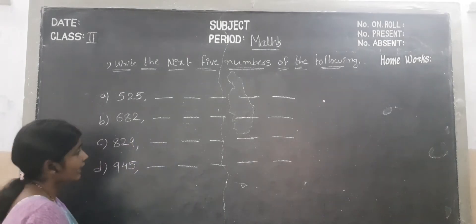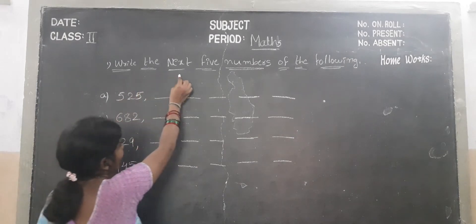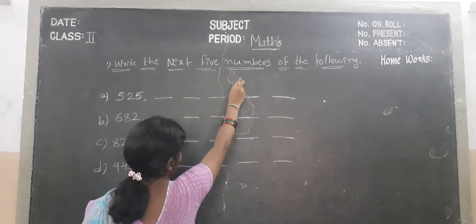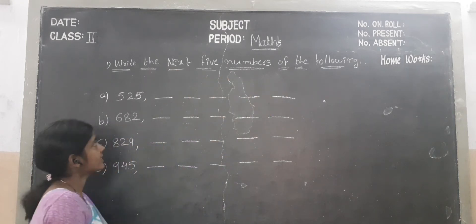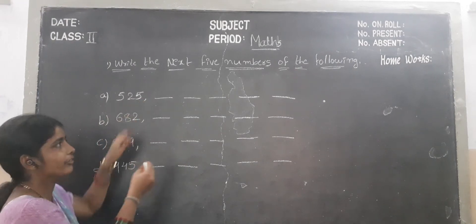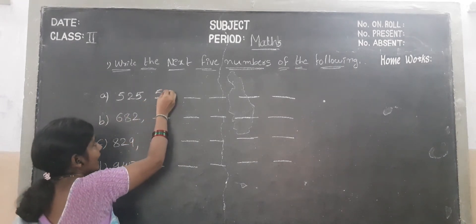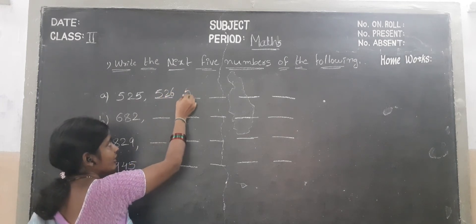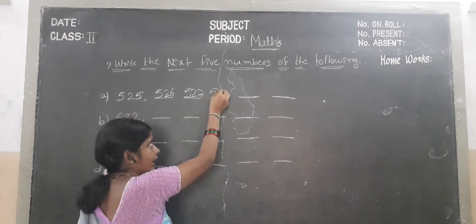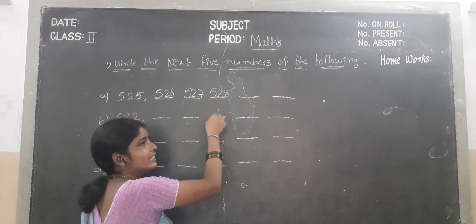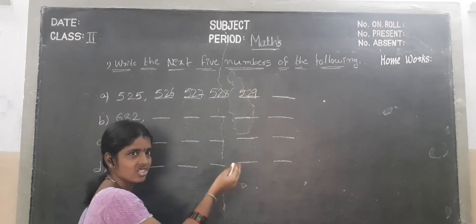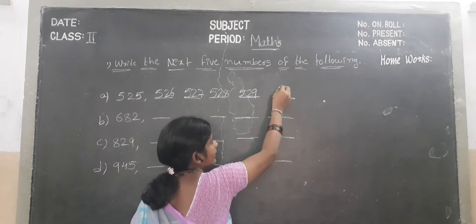Children, we do another exercise. Write the next 5 numbers of the following. See the first sum — 525. We add plus 1 — which number will become? 526. We add plus 1 — which number will become? 527. Next number children? 528. Next number? 529. Next number? 530.